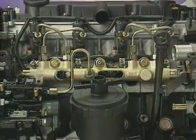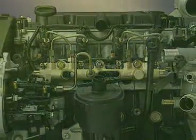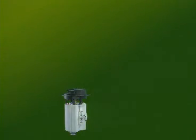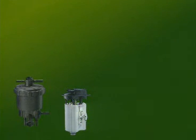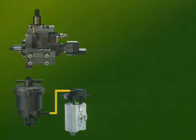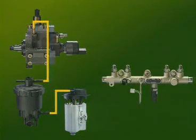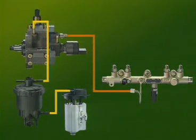The Common Rail injection system comprises an electric low-pressure pump preceded by a filter, main fuel filter, and a high-pressure pump driven by the engine. The pump supplies a constant flow of diesel to the Common Rail, which acts as a reservoir for the high-pressure fuel.